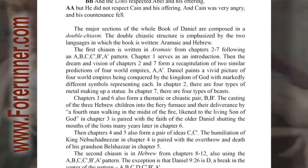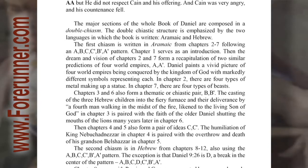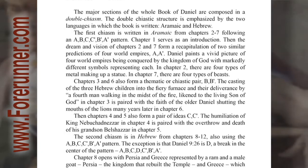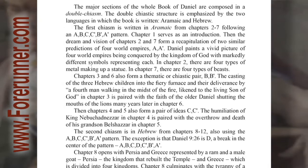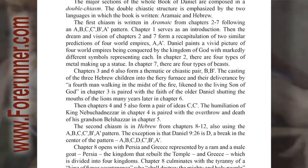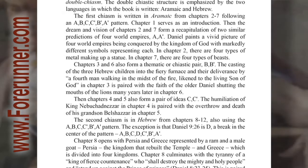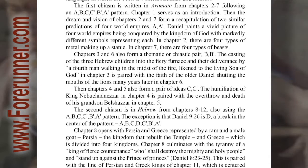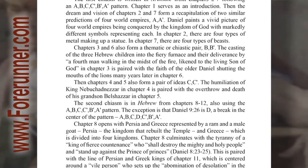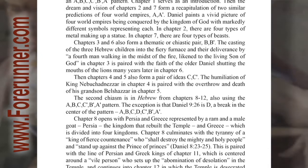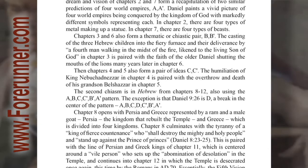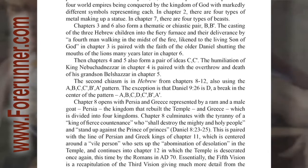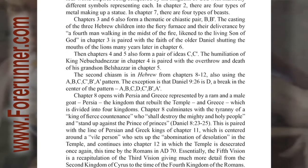The major sections of the whole book of Daniel are composed in a double chiasm. The double chiastic structure is emphasized by the two languages in which the book is written. The first chiasm is written in Aramaic from chapters 2 through 7, following an A, B, C, C prime, B prime, A prime pattern. Chapter 1 serves as an introduction. Then the dream and vision of chapters 2 and 7 form a recapitulation of two similar predictions of four world empires. Daniel paints a vivid picture of four world empires being conquered by the kingdom of God, with markedly different symbols representing each. In chapter 2, there are four types of metal making up a statue; in chapter 7, there are four types of beasts.